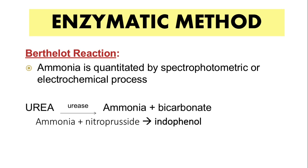For the enzymatic method, we have the Berthelot reaction, where ammonia is quantitated by spectrophotometric or electrochemical processes. The urea in the sample is first hydrolyzed to ammonia and bicarbonate ions by the enzyme urease present in the reagent. Once ammonia is formed, it is converted to indophenol with the addition of nitroprusside, which is also contained in the reagent.